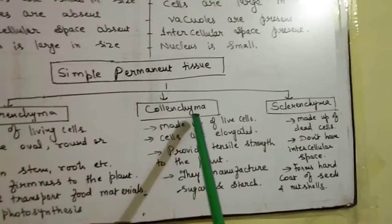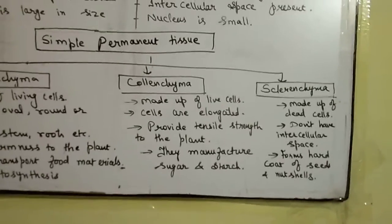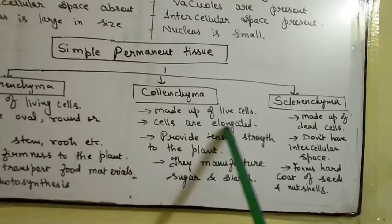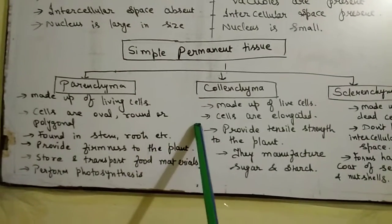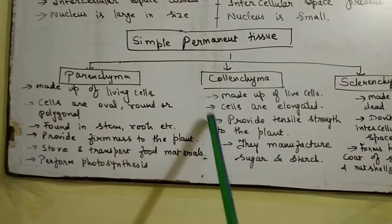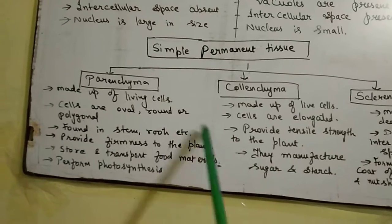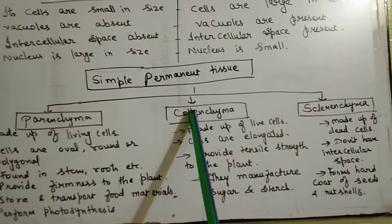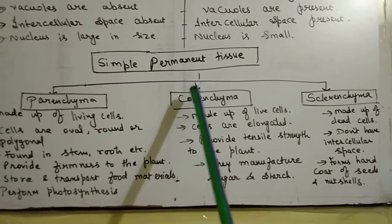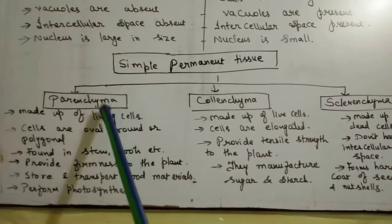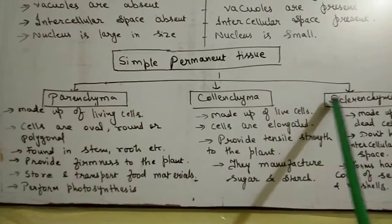Next is colenchyma. Colenchyma is also made up of living cells, but the cells are elongated. You can write the difference between parenchyma and colenchyma using a comparison chart.